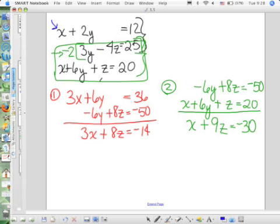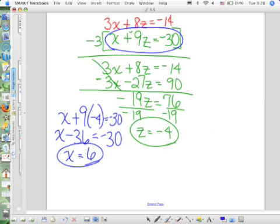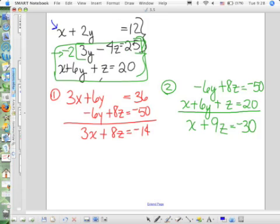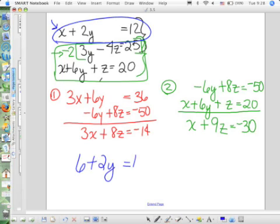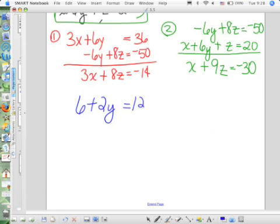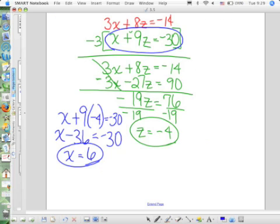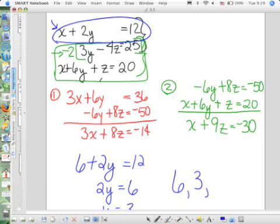All right, so we're finishing off here. If x is equal to 6, then using this equation, 6 plus 2y equals 12, subtract 6 from both sides, and divide by 2. So, y was equal to 3. x was 6, y was 3, z was negative 4.